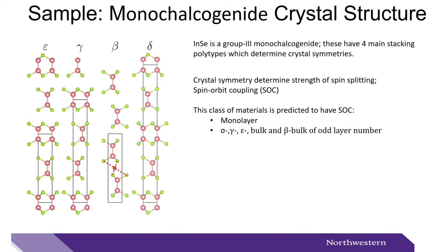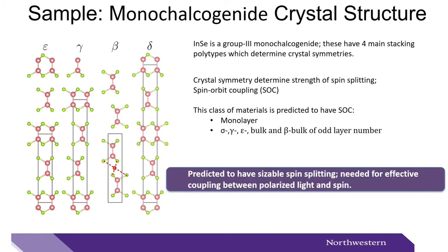So first, let's start with an overview of indium selenide. Indium selenide is a group 3 monochalcogenide. These materials have four main stacking polytypes, which determine crystal symmetry. Crystal symmetry determines the strength of spin-splitting, or spin-orbit coupling. These classes of materials are predicted to have spin-orbit coupling for the monolayer, as well as the sigma, gamma, and epsilon bulk, as well as for restricted cases of the beta bulk. And for these particular cases, they are predicted to have sizable spin-splitting, which is needed for effective coupling between polarized light and spin.